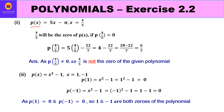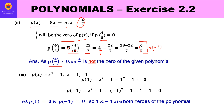For part two, p(x) = 5x - π, verify x = 4/5: p(4/5) = 5(4/5) - π = 4 - 22/7. The LCM is 7, giving (28 - 22)/7 = 6/7. Since 6/7 ≠ 0, p(4/5) ≠ 0, so 4/5 is not the zero of the given polynomial.